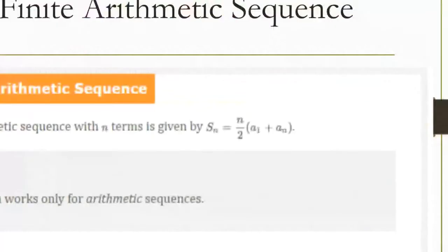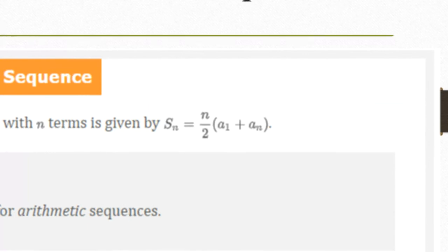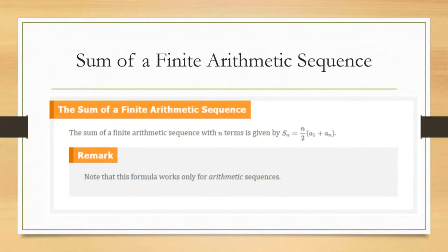The sum formula is S_n = (n/2)(a_1 + a_n), where n is how many terms you want to add up. It's essentially the average of the first and last term multiplied by the number of terms. This formula is only for arithmetic sequences — if you have a geometric sequence or another type, you use a different formula.